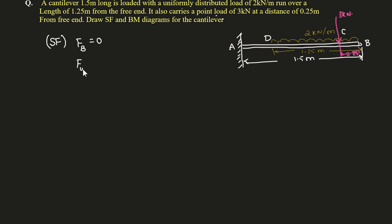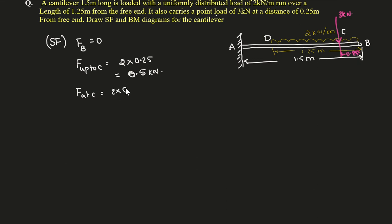Shear force up to C: UDL is 2 kN per meter acting over 0.25 meter, so that is 0.5 kN. At C, a sudden point load of 3 kN is also acting, so shear force at C becomes 2 × 0.25 + 3 = 3.5 kN. According to sign convention, these are all positive because all loads are acting downwards — force is positive if it is in the direction of gravitational force.